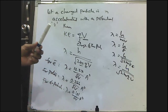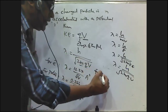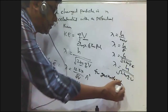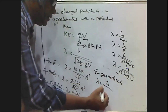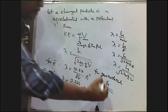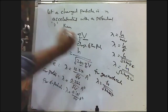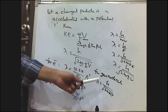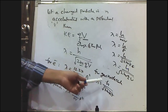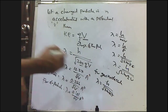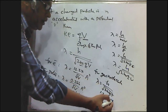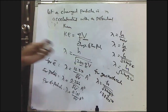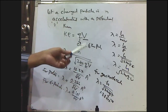Even for gas molecules, the wavelength is given by lambda = h / √(3mkT), where k is the Boltzmann constant and its value is 1.38 × 10⁻²³ J/K. These are the expressions associated with De Broglie's dual nature of matter.